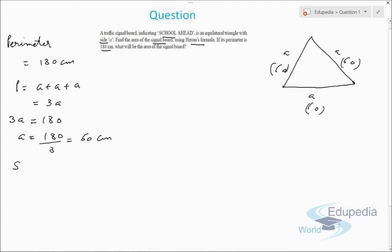Now we need to find the semi-perimeter, which is half the perimeter: 180 ÷ 2 = 90. Then we need to find s minus a for all the sides. Since all sides are equal, we only need to find one value: s − a = 90 − 60 = 30 centimeters.